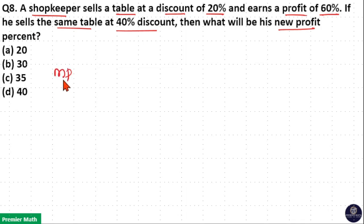Here, consider the marked price of this table as 100 rupees. Now, he sells the table at a discount of 20%, which means 20% discount on 100 rupees, so 100 minus 20. 80 rupees is the selling price of this table.